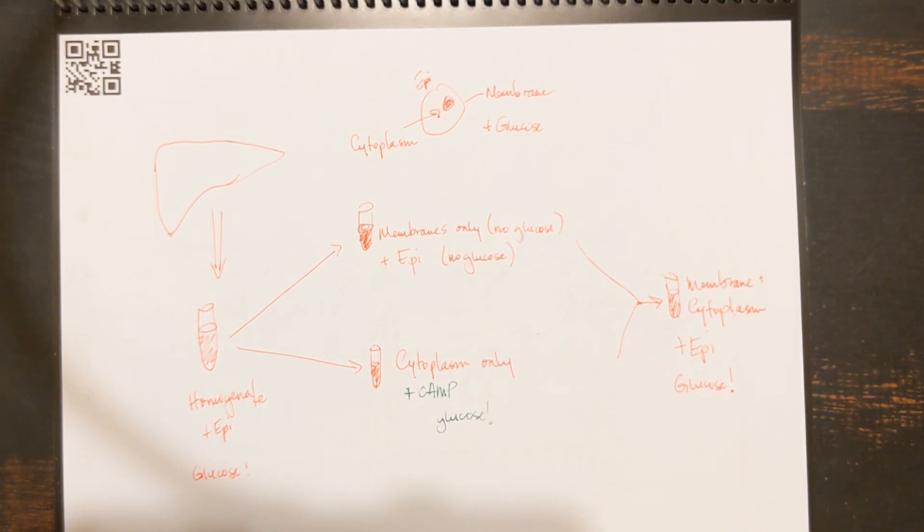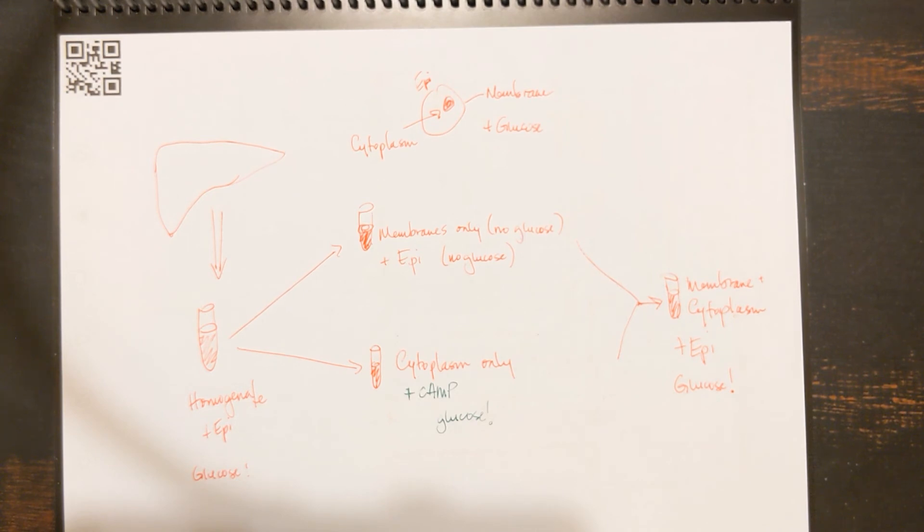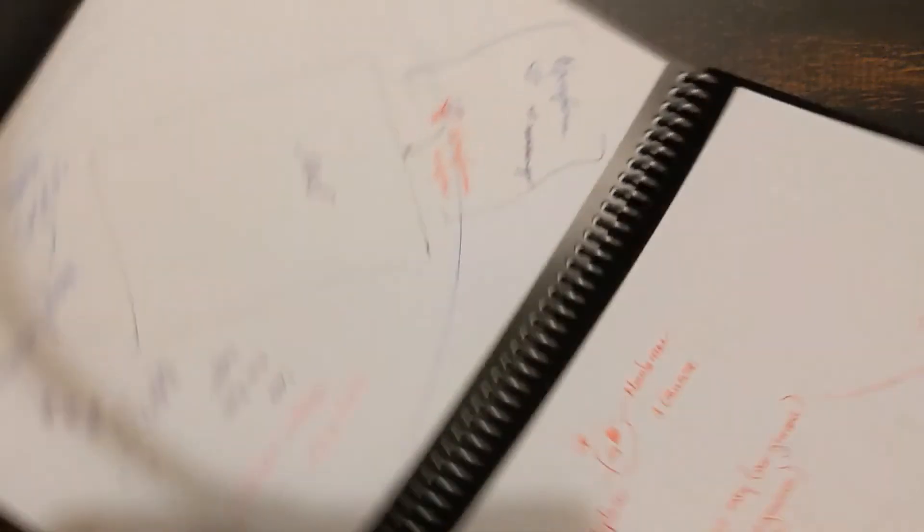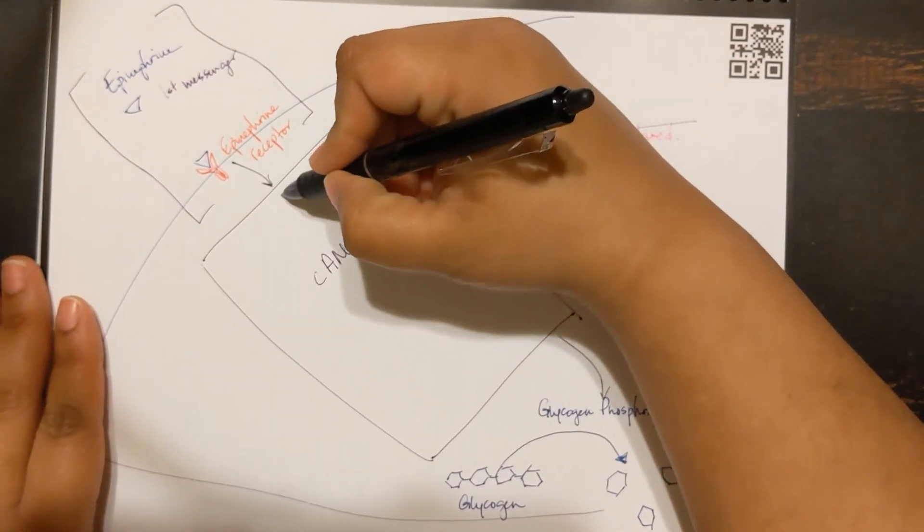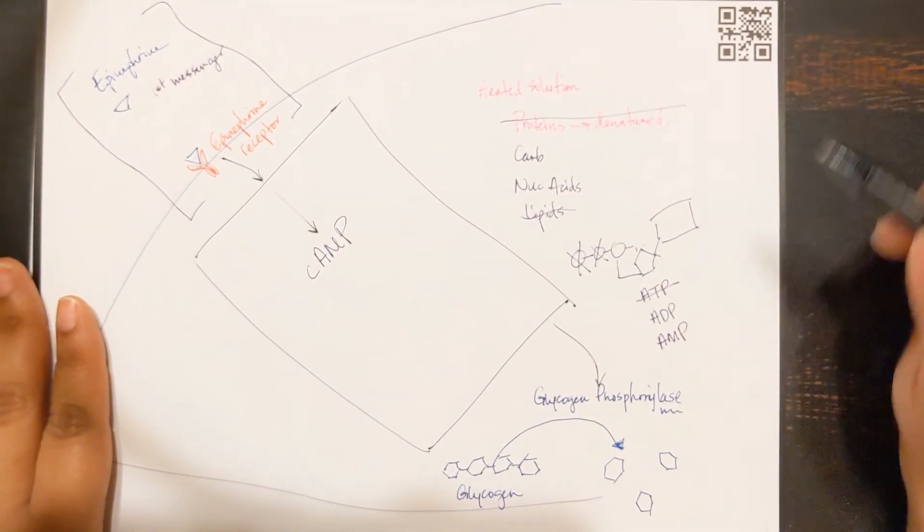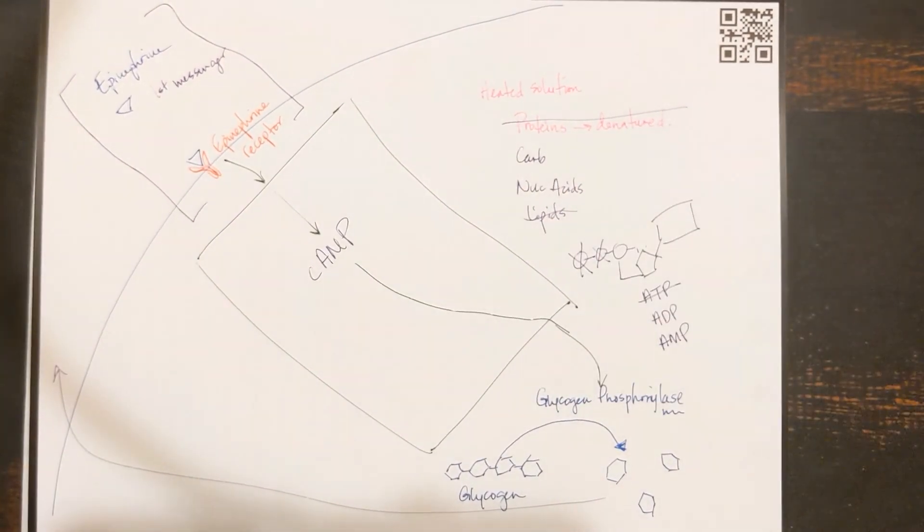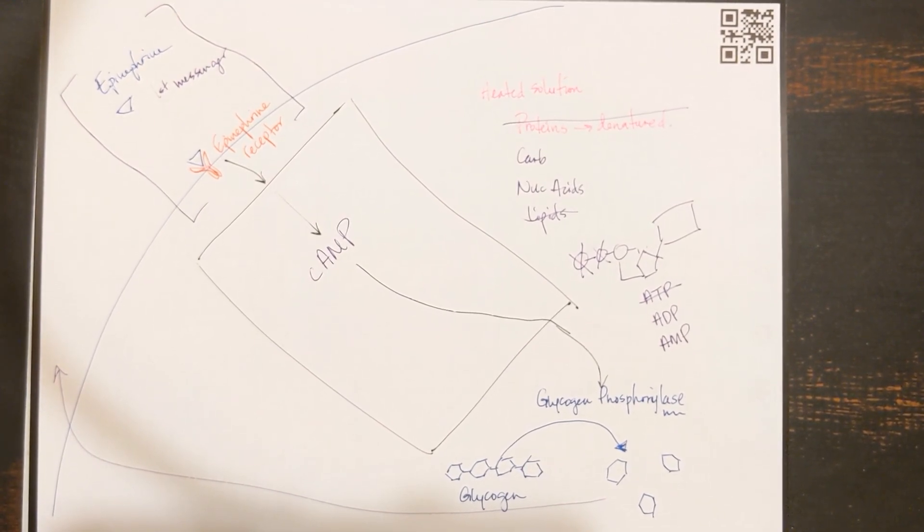And when he did that, it actually produced glucose. So what he was able to show is cyclic AMP was able to take the place of that first messenger of epinephrine, and could lead to the same effects as adding epinephrine. He was able to conclude that somewhere along the way, an epinephrine receptor causes the creation of cyclic AMP, and that cyclic AMP then leads to the activation of glycogen phosphorylase. In reality, there are many more steps to this pathway. It's more complicated than that, but this was an important key step.